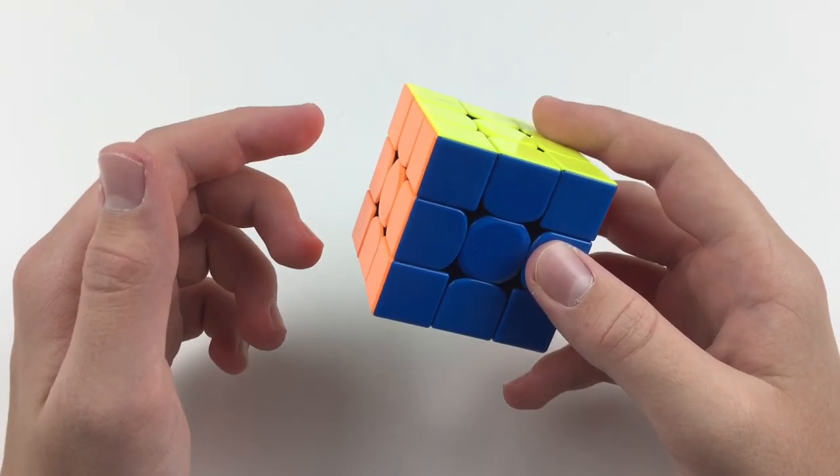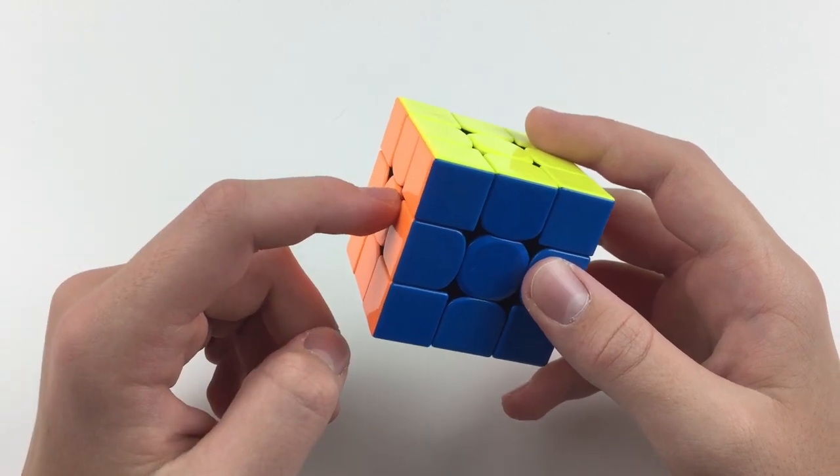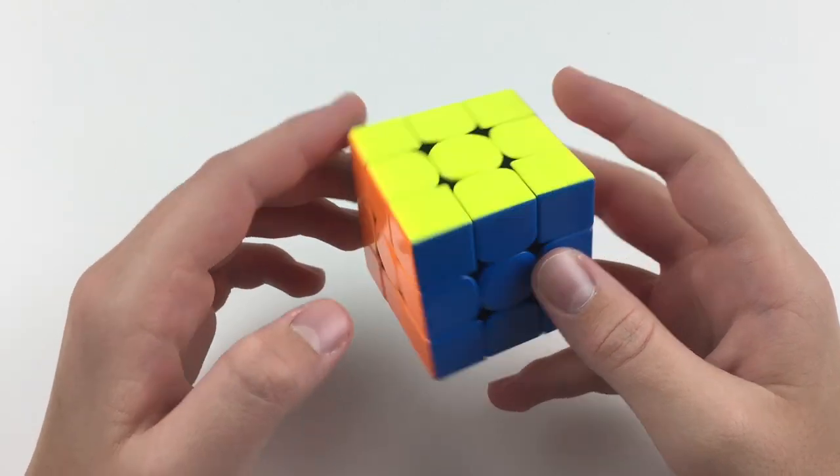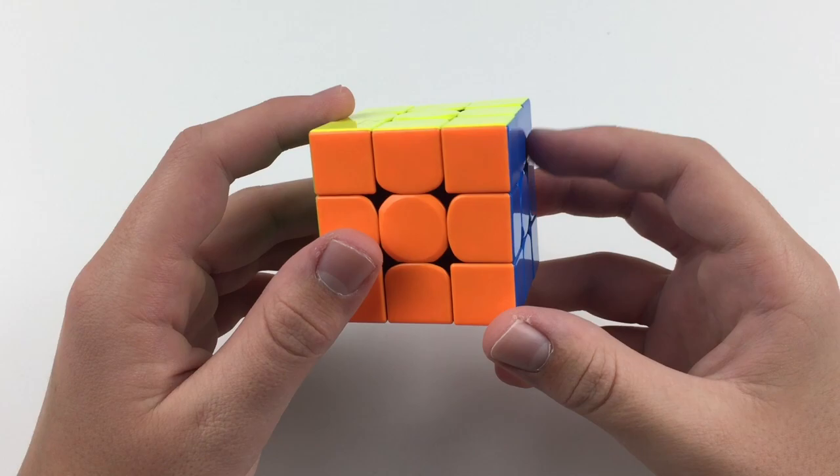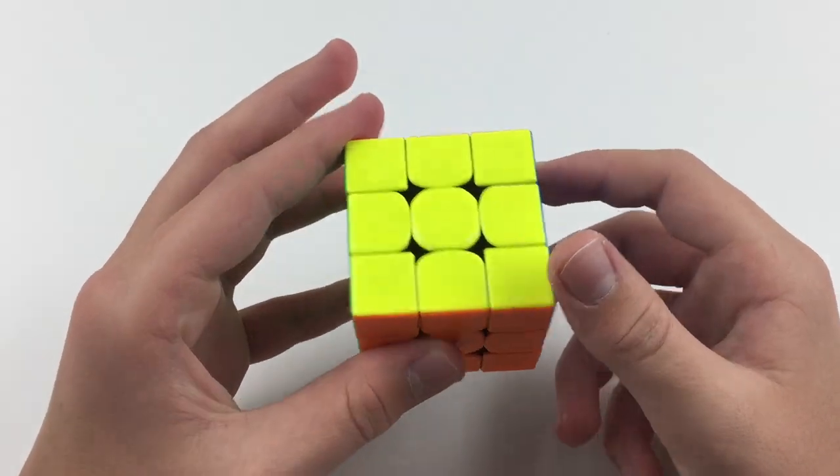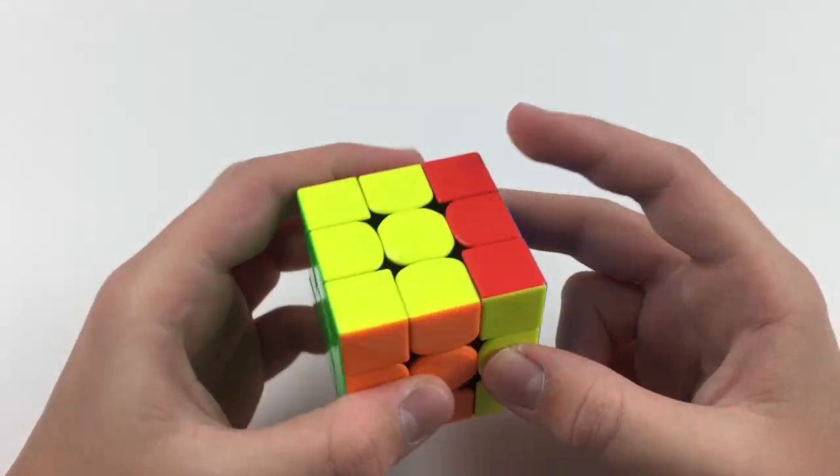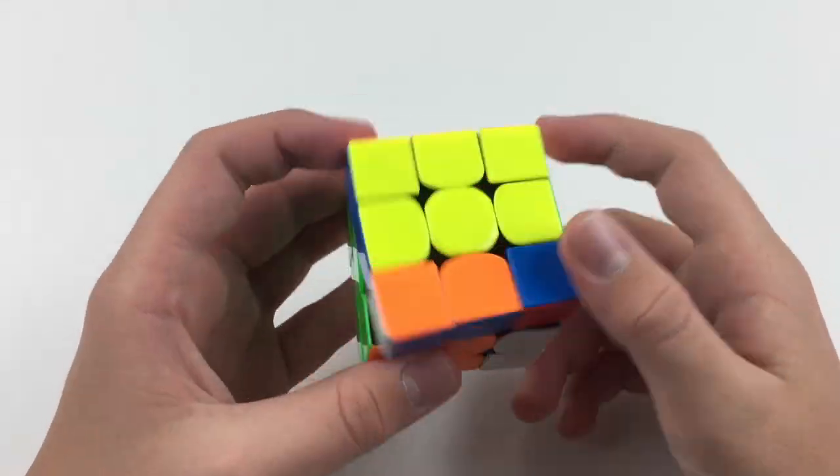The next thing is the size of the cube, because this is a 54mm 3x3, and many people think that this cube wouldn't be as good or that it would be too small. Personally, I don't think it makes that much of a big difference for me.